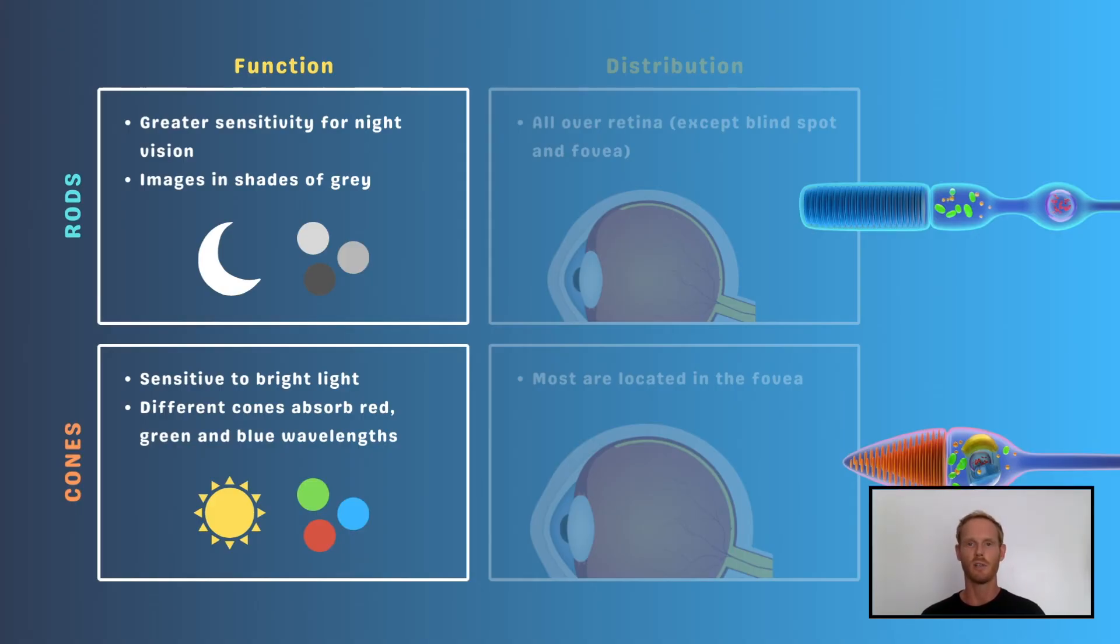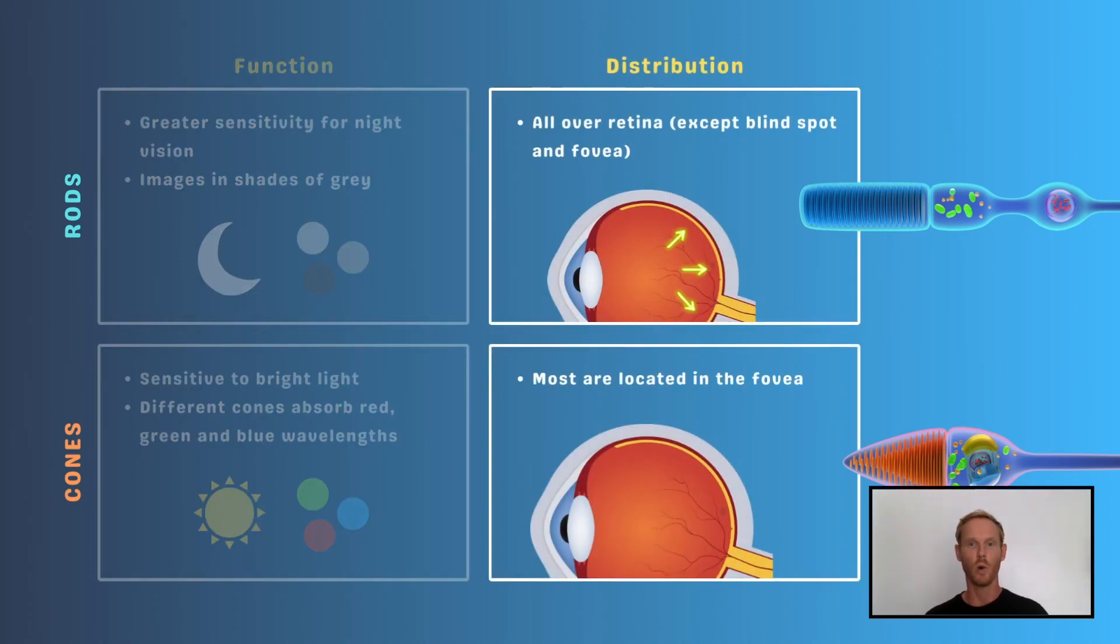There are thought to be three different types of cone cell. One type responds best to red light, one to green, and one to blue. Rod cells are found all over the retina except at the blind spot and fovea, while most of the cone cells are concentrated at the fovea.